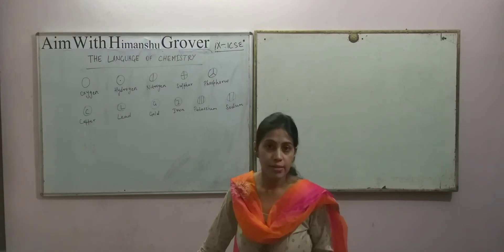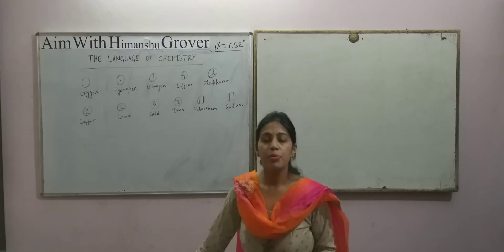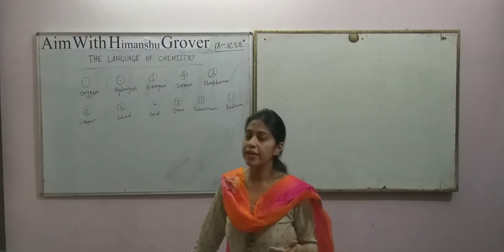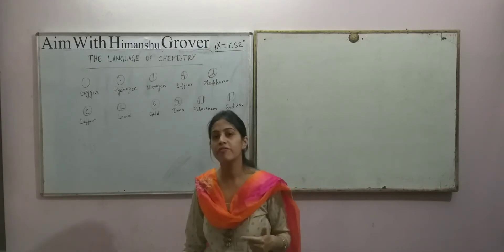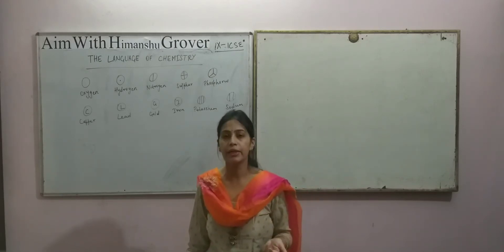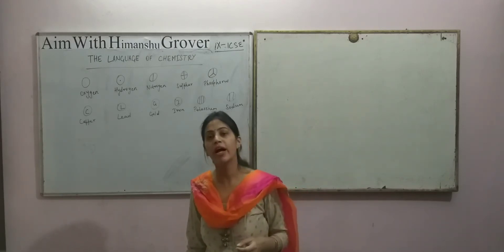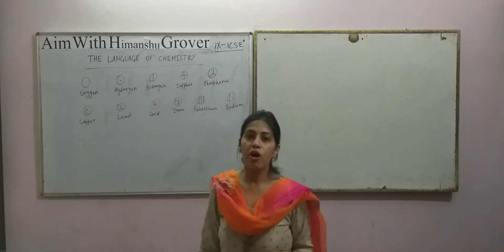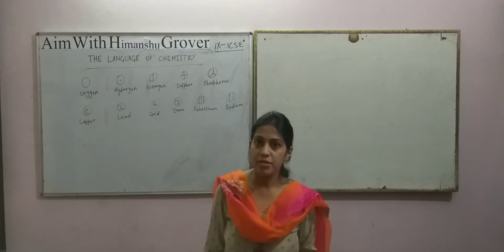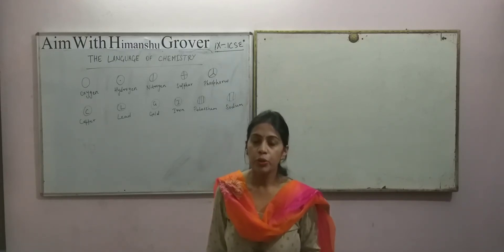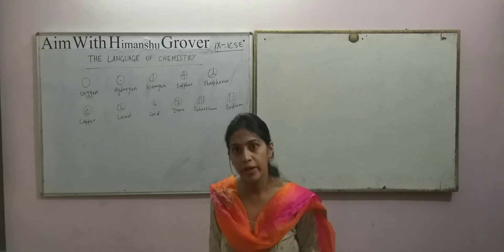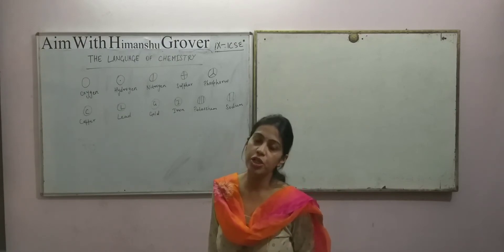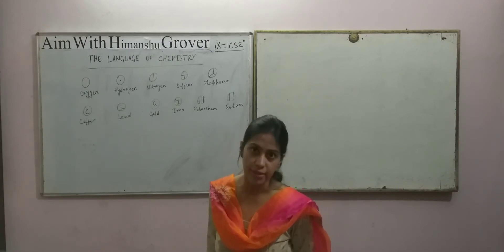He said the representation of elements is based on the first letter or the first letter along with another letter. The number of elements to be named is more than 100 — almost 118 — while the number of English letters is only 26.